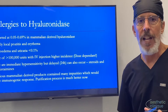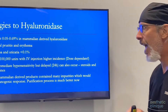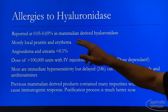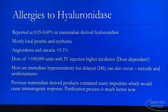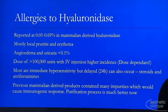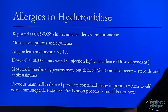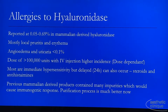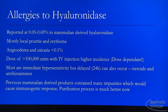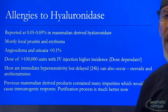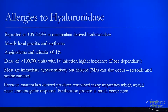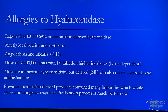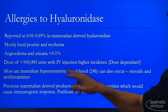Regarding allergies to hyaluronidase — allergic reactions are reported to be 0.05 to 0.69% when delivering mammalian hyaluronidase. These are mostly pruritus (itching) and erythema. Angioedema and urticaria occur less frequently, and severe swelling occurs in less than 0.1%, less than 1 in 1,000 people. At doses over 100,000 units — which we don't use when dissolving HA filler — there's a much higher incidence. So it is dose dependent. Most are immediate hypersensitivities.